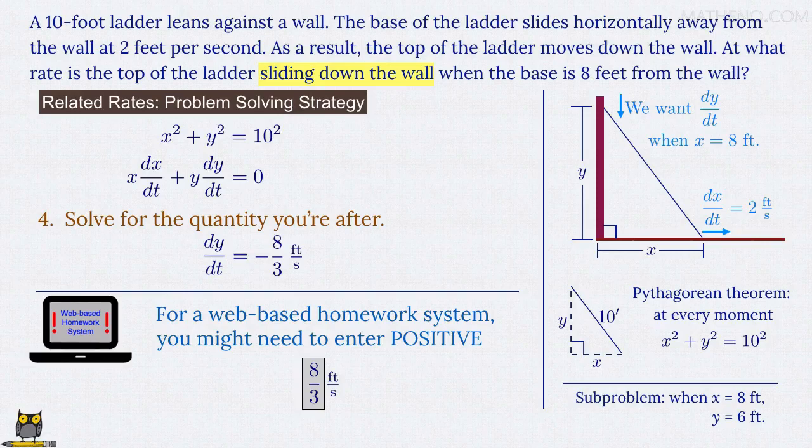Generally, if you think you've solved a related rates problem correctly and got a negative value, but the system is rejecting it, try entering the positive value instead and see if that works. It probably will.